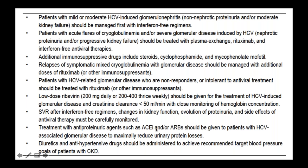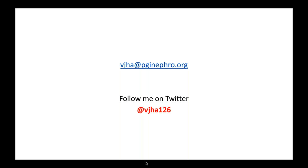Management should first use interferon-free regimens. Acute flares of cryoglobulinemia should be treated with plasma exchange, rituximab, and antiviral therapies. Additional immunosuppressive drugs include steroids, cyclophosphamide, and MMF. Relapses of symptomatic mixed cryoglobulinemia should be managed with additional rituximab or other immunosuppressants. HCV-related glomerular disease non-responders or intolerant to antiviral therapy should be treated with rituximab. Low-dose ribavirin should be given for HCV-induced membranous disease with creatinine clearance less than 50, with close monitoring of hemoglobin. ACE inhibitors and ARBs should be given to all patients to maximally reduce urinary protein losses.